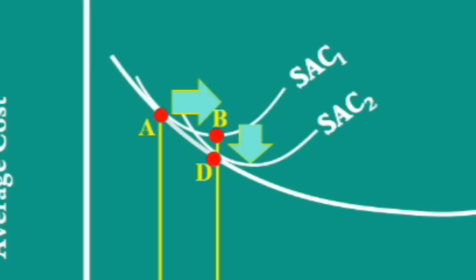If the firm takes the path A to B and then to D, the long run average cost curve would have scallop. But, it doesn't do that.